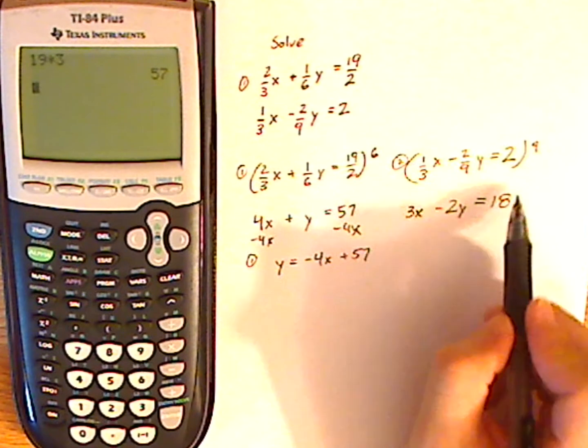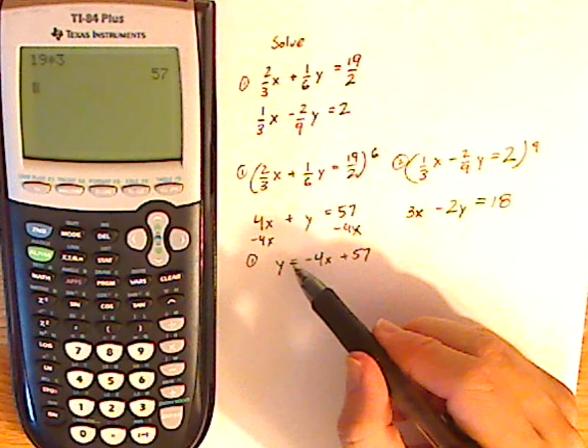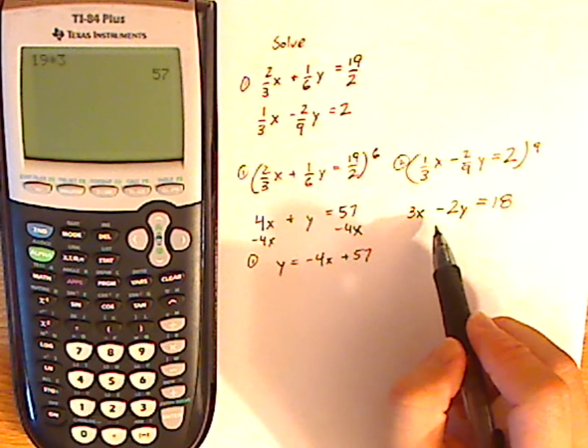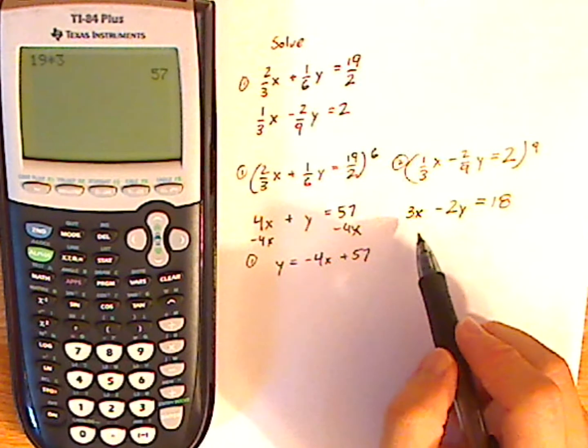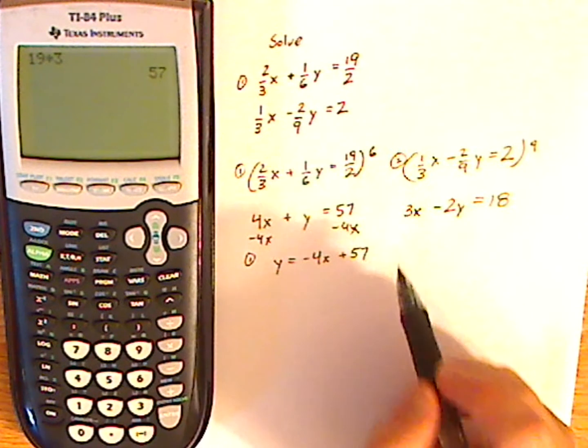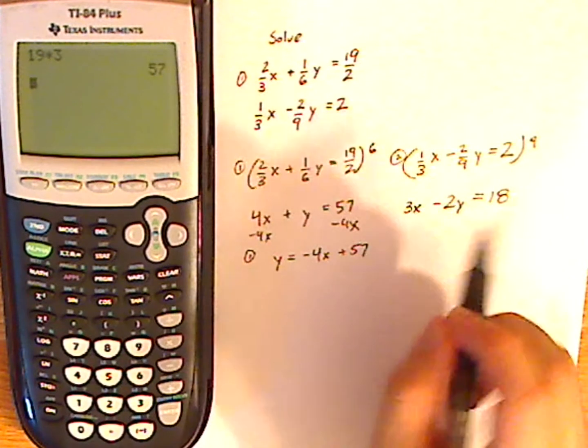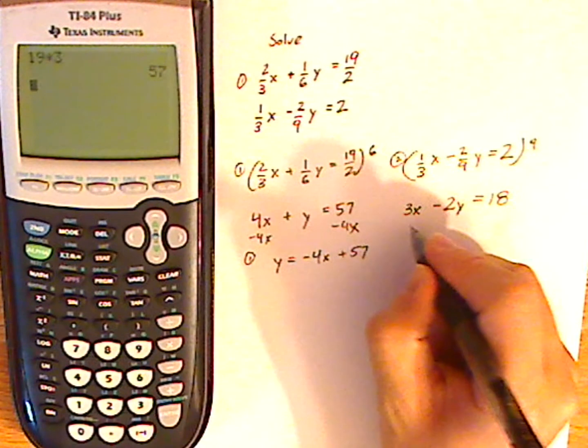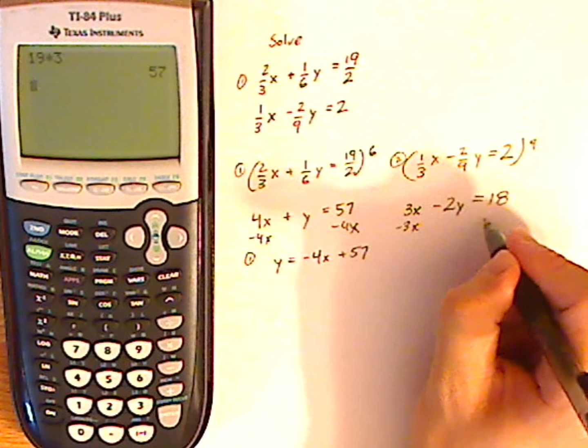Now, after I get rid of all the denominators, I'm going to do the same thing as I did over here, and that is I'm going to solve for y. And again, you need to solve for y when you're plugging into your calculator. So I'm going to subtract both sides by 3x.